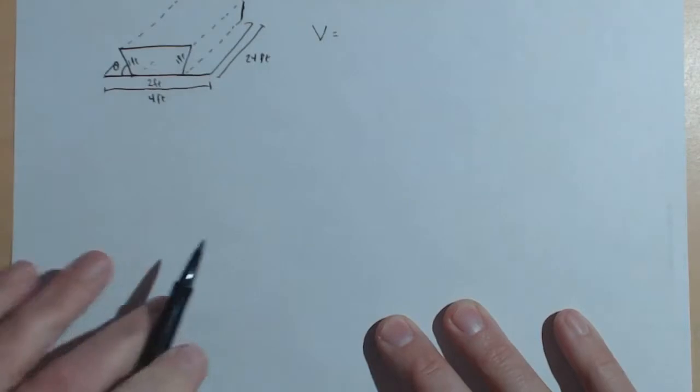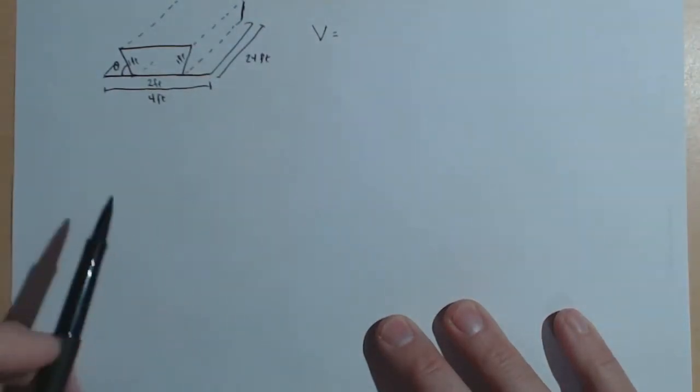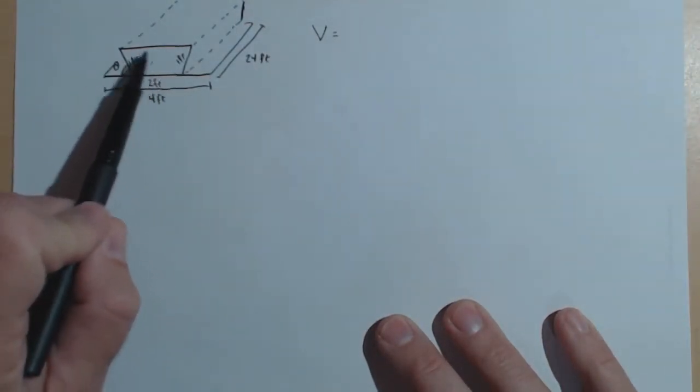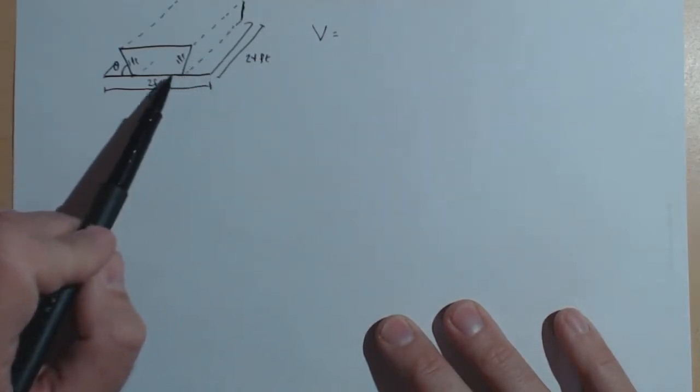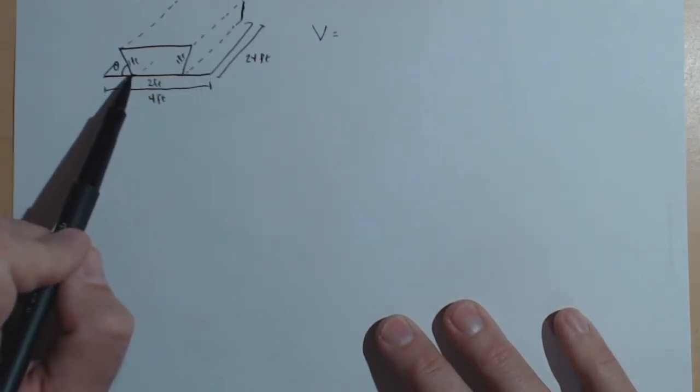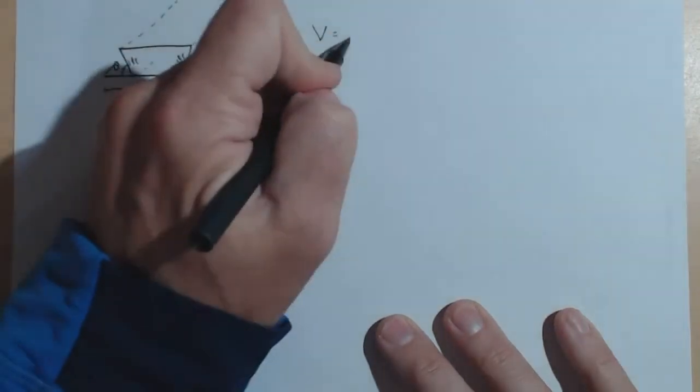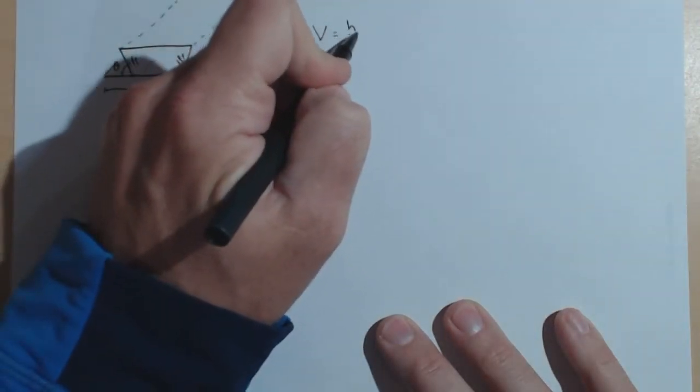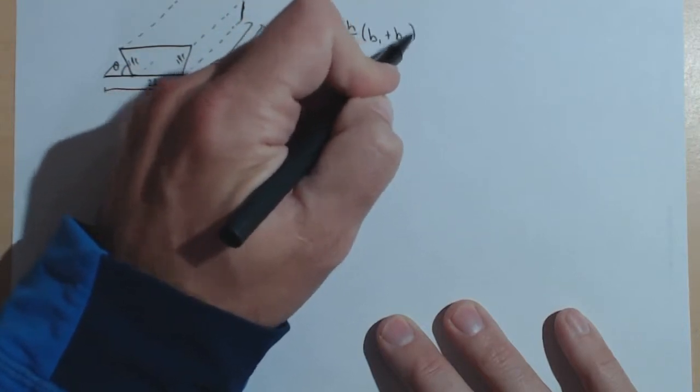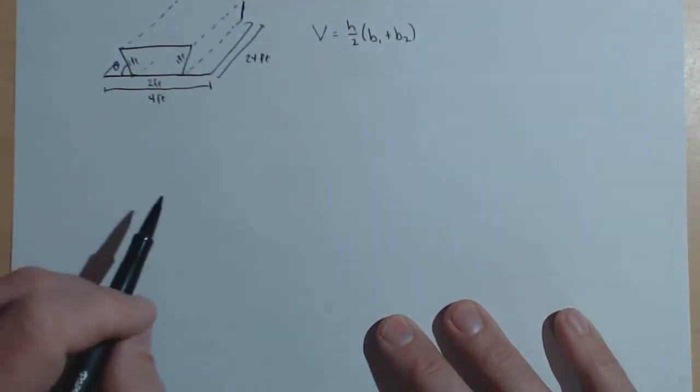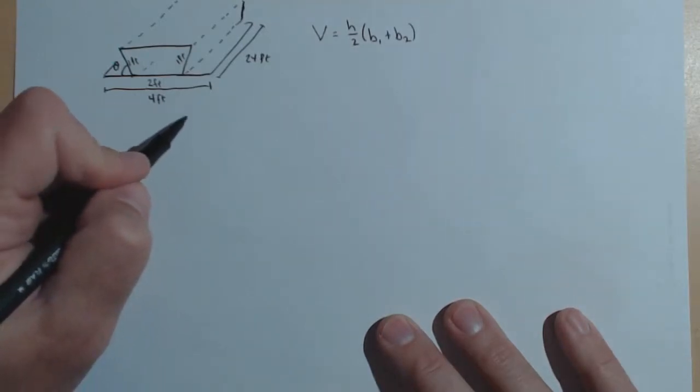Let's start off with just getting a formula for volume for this thing. It's going to be the area of the base times the depth or the length. Now, the area of the base is a trapezoid. Area of a trapezoid is the height of the trapezoid over 2 times base 1 plus base 2. We're going to need to label all this stuff.